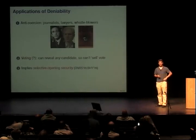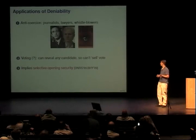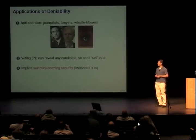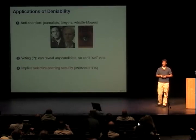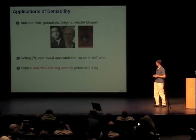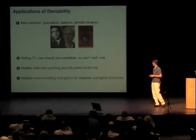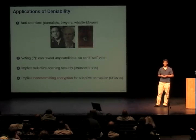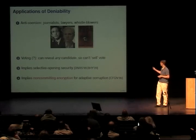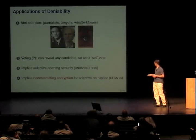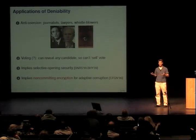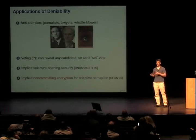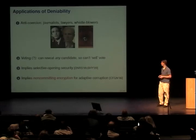In terms of theoretical cryptographic concepts, deniability is a nice concept because it actually implies a strong notion called selective opening security for encryption. It also implies something called non-committing encryption, which helps you design adaptively secure protocols. But it's actually strictly stronger than both of these — in particular, the ciphertexts that are equivocable can actually be decrypted by real players, not just generated by a simulator, so they have real content behind them.